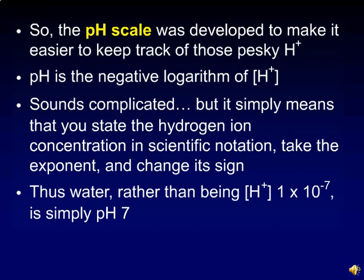That sounds complicated, but it simply means that you state the hydrogen ion concentration in scientific notation, take the exponent, and change its sign. Thus, for water, rather than saying the hydrogen ion concentration is 1 times 10 to the minus 7th, we simply say it has a pH of 7.